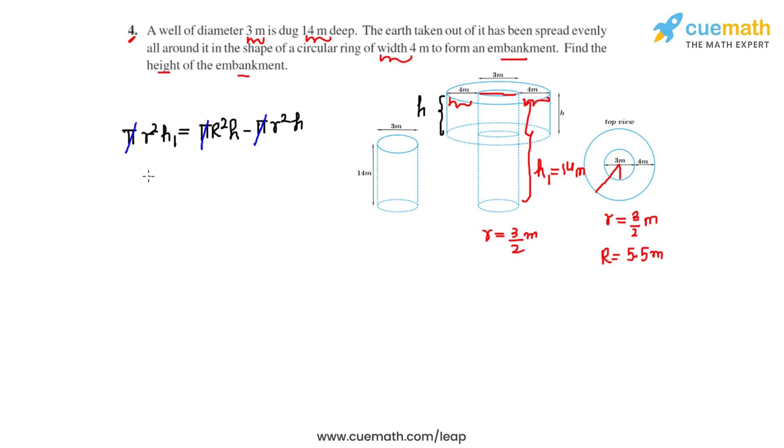We're left with r²h₁ = h(R² - r²). What we can write is r²h₁ = h(R + r)(R - r), because this is in the form a² - b² = (a + b)(a - b).